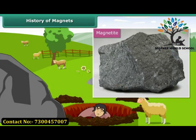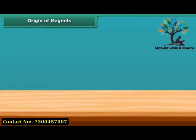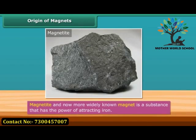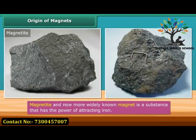This type of rock was subsequently named magnetite, which was named after Magnus himself. Magnetite is a natural magnet and contains iron. In later days, this was more widely known as a magnet.